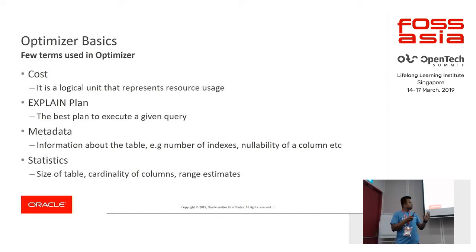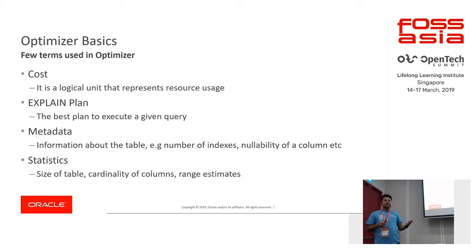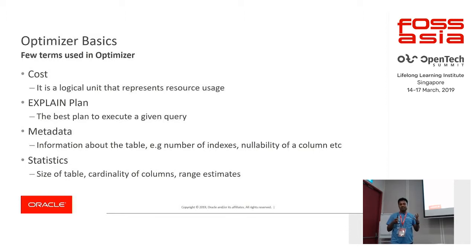Sometimes the optimizer may not generate the best plan. The basic reason is because you may not have the exact or updated statistics of the table. You might have come across many blogs or scenarios where a DBA says their query is not performing well or is getting slowed down. Most of the time, the reason is that you may not have updated statistics about the table in your database.